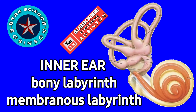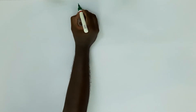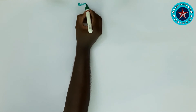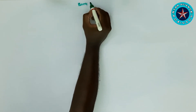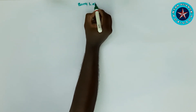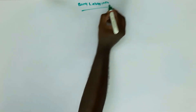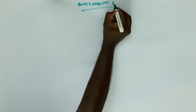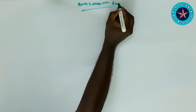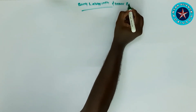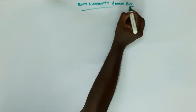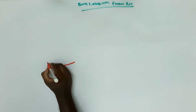Hi friends, I'm Robinson, welcome to our channel Star Science Robinson. Today we are going to see about the bony labyrinth and the membranous labyrinth of the inner ear. The bony labyrinth is a cavity within the temporal bone, lined with periosteum.